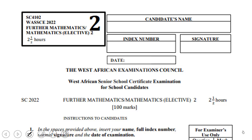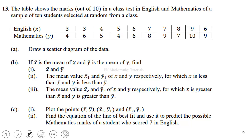Let's continue solving the WASI 2022 elective mathematics paper 2, further mathematics paper 2. We are going to continue with question 13. The table shows the marks out of 10 in a class test in English and mathematics of a sample of 10 students selected at random from a class.